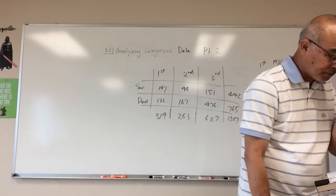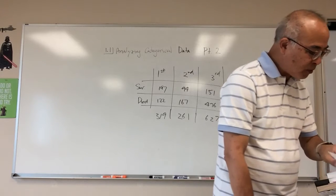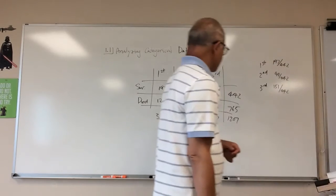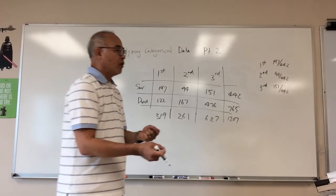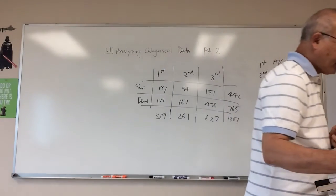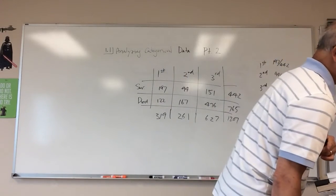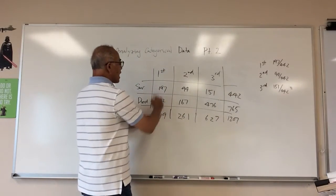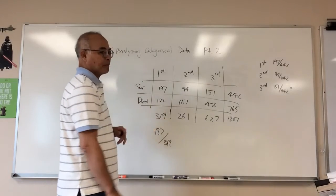Let's go to the example. Part A asks: what proportion of survivors were third-class passengers? That's asking, given that you survived, what percent are third class? Part B asks: what percent of first-class passengers survived? Given that you're first class, what percent survived? That would be 197 divided by 319 — that's a conditional relative frequency.